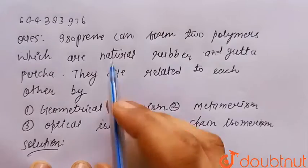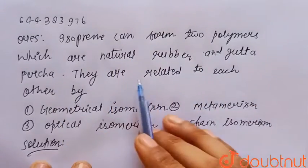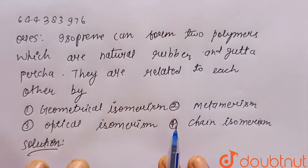Hello everyone, consider the given question. Isoprene can form two polymers which are natural rubber and gutta percha. They are related to each other by. So the four options are given.